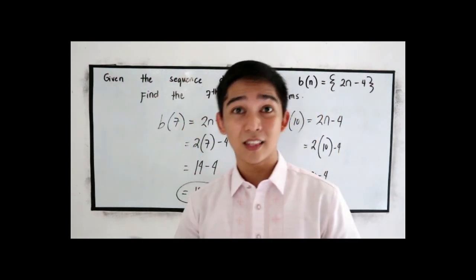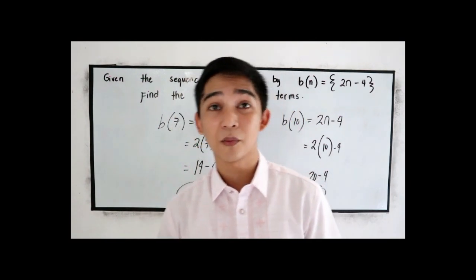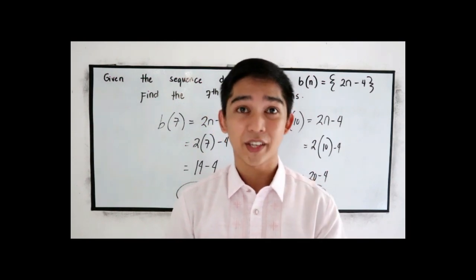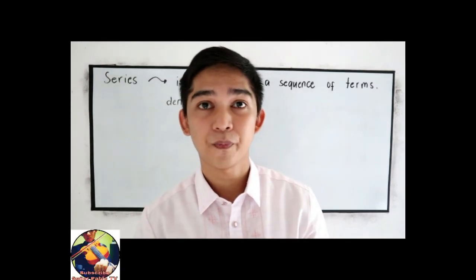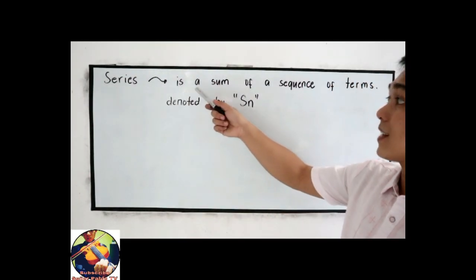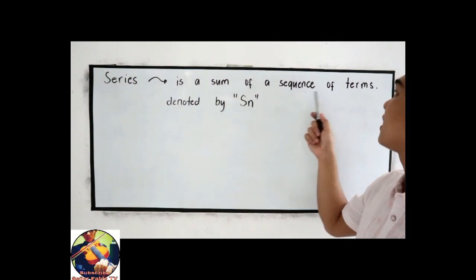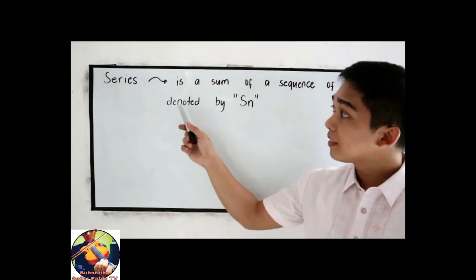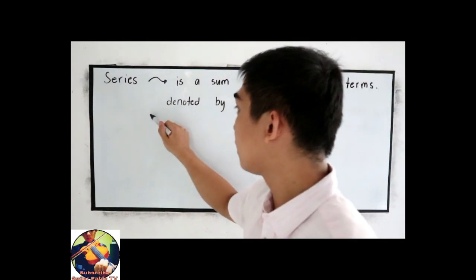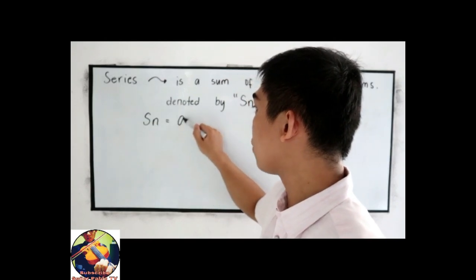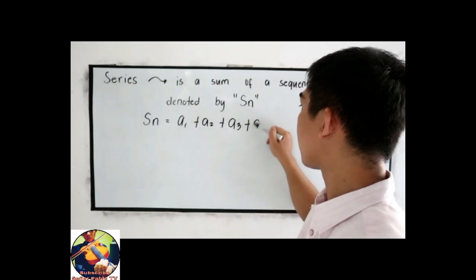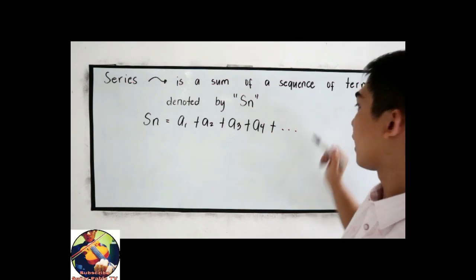Before we proceed to the arithmetic, geometric, Fibonacci, and harmonic sequences, I will introduce what a series is. By definition, a series is a sum of a sequence of terms, and it is denoted by S sub n. So Sn equals A1 plus A2 plus A3 plus A4, and so on.